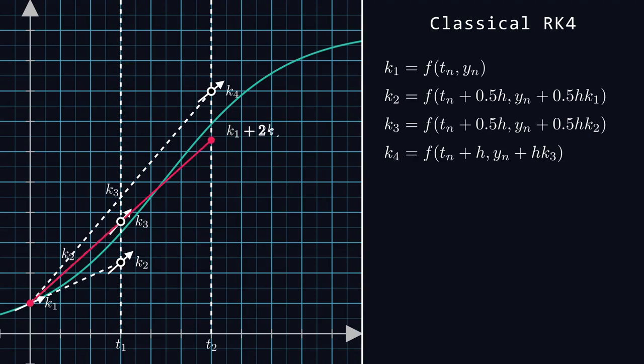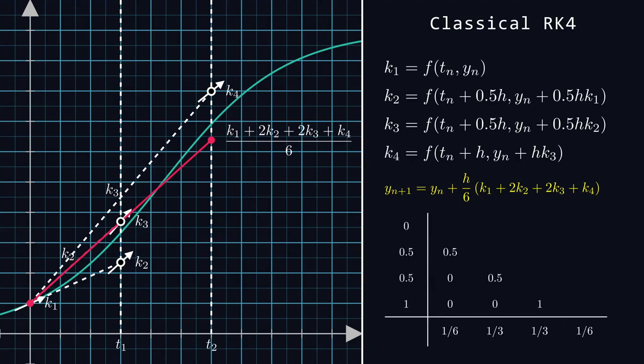Taking a sort of weighted average of these slopes, we end up with our next point. Sometimes you'll see this procedure summarized in a Butcher tableau. I'll leave it as an exercise for the viewer to figure out the correspondence here.